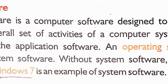Next — system software. A system software is a computer software designed to control and manage the overall set of activities of a computer system. System software runs the application software, and the operating system is an example of system software.